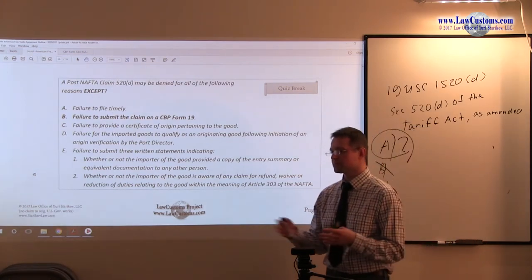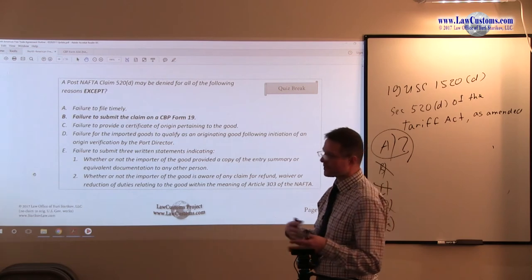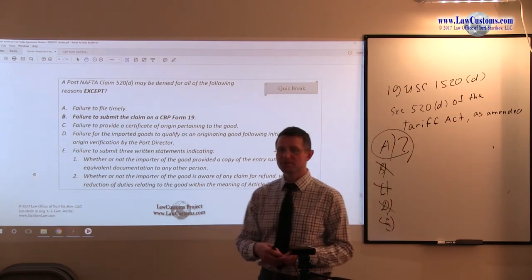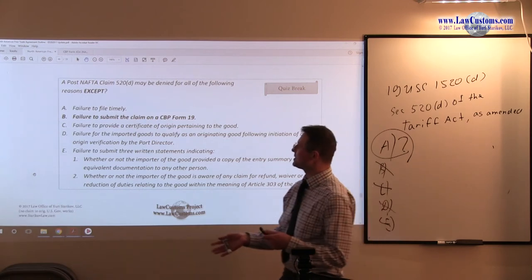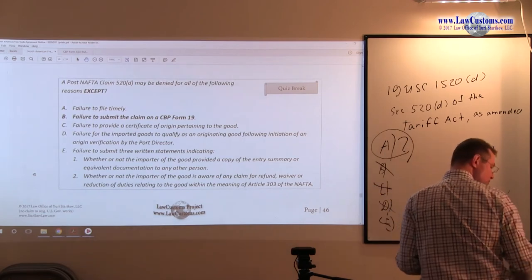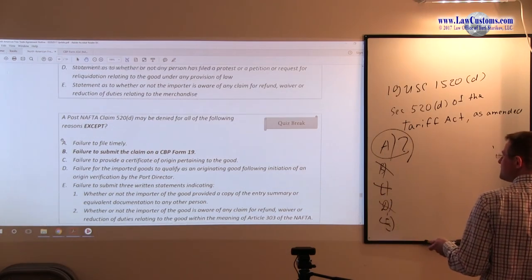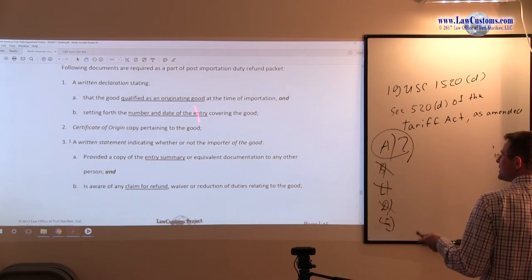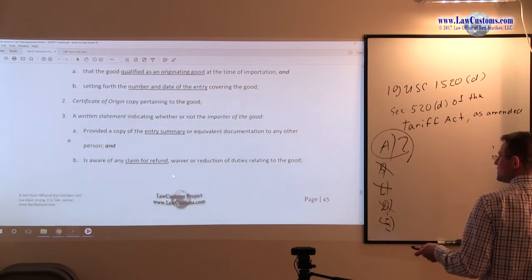So whether that will be true in the years ahead, I do not know. But irrespective of that, CBP Form 19, the protest form, is not part of the 1520D claim. It is not part of the equation. And it is not listed obviously over here or anywhere.